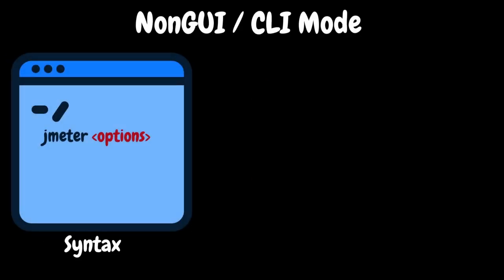The basic syntax for running a JMeter test using CLI or non-GUI mode is 'jmeter' followed by some options. These options can be categorized into two groups: basic and additional options. For some options, we may need to specify additional parameters. Let's start with the basic options and then look at the additional options.